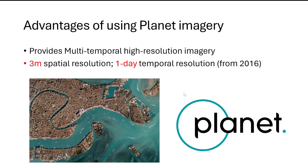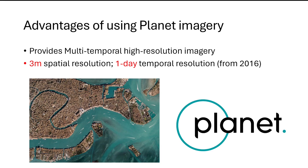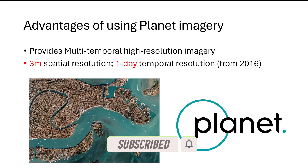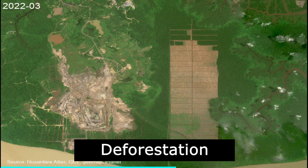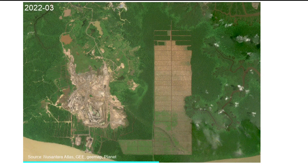Before showing you the actual process, I want to highlight a few advantages of using Planet imagery. Planet imagery is generated by Planet Labs and provides multi-temporal high resolution satellite imagery. It has 3-meter spatial resolution and one-day temporal resolution, meaning the satellite revisits the same place each day. Using this imagery, we can detect deforestation patterns or land use/land cover changes within a short period of time.